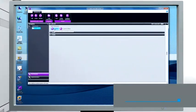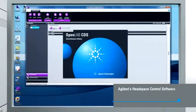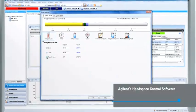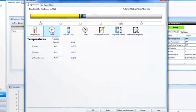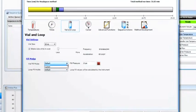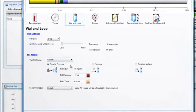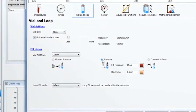The 7697A Headspace control software is seamlessly integrated with the Agilent GC and GC-MSD data systems and facilitates full control of all sampler parameters with the added benefit of method conversion and development wizards.